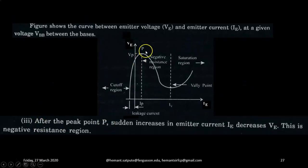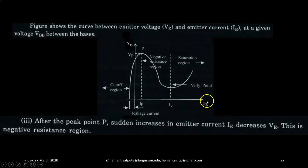After the peak point P, sudden increase in the emitter current IE. Now emitter current will start increasing as shown here will decrease VE because number of charge carriers are injected in that region. And because of excess charge carriers, the voltage drops. So this is a negative resistance region. So from point P to this point, this is called negative resistance region because here current increases but voltage drops.